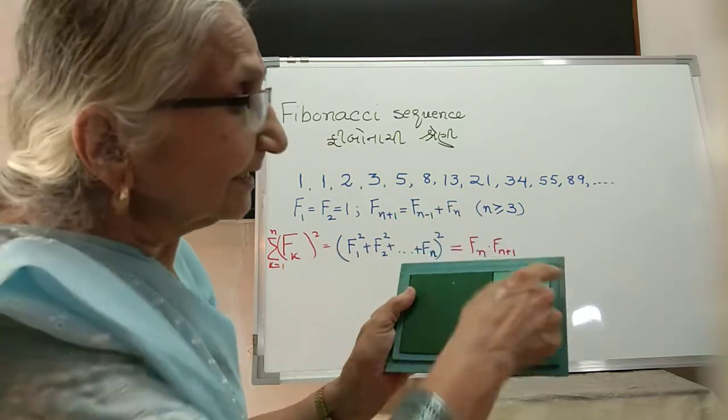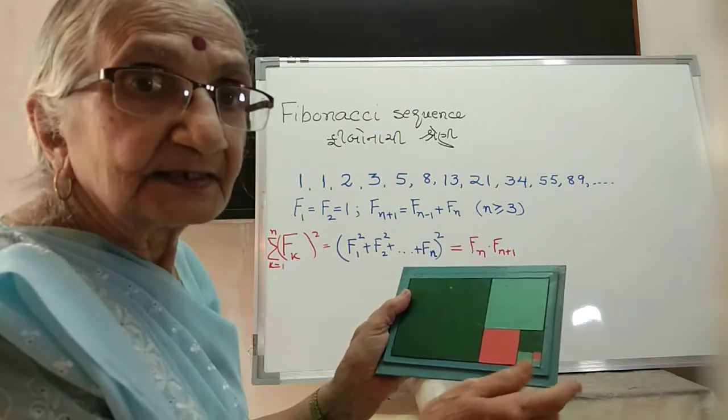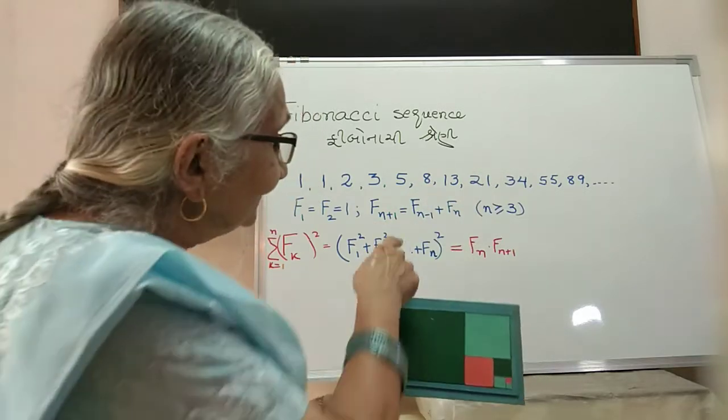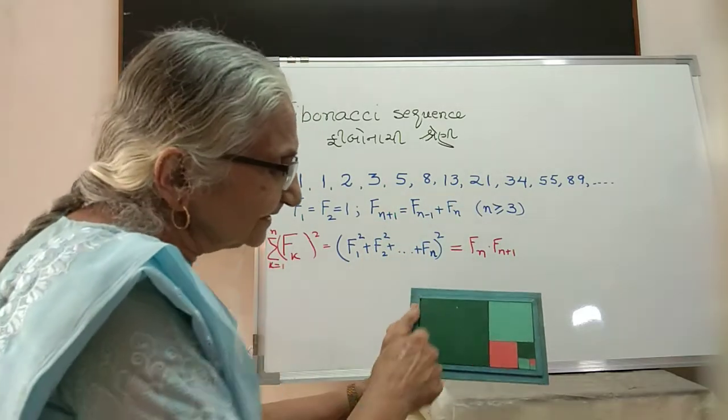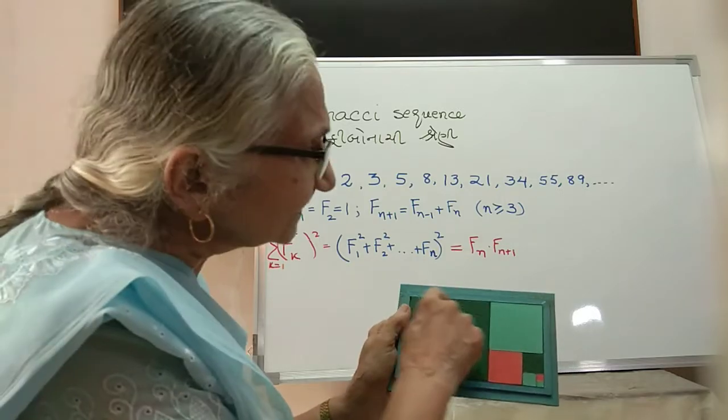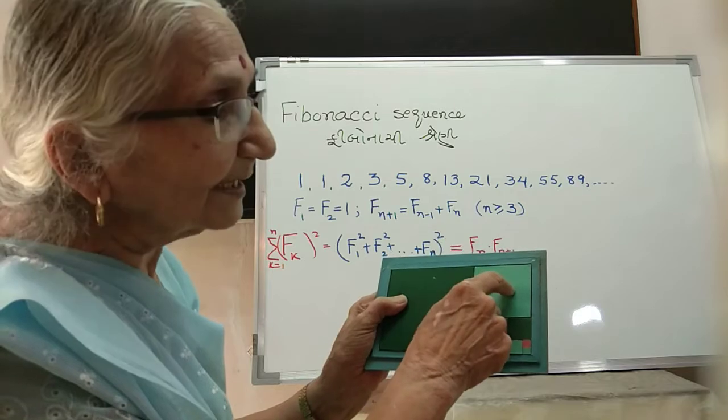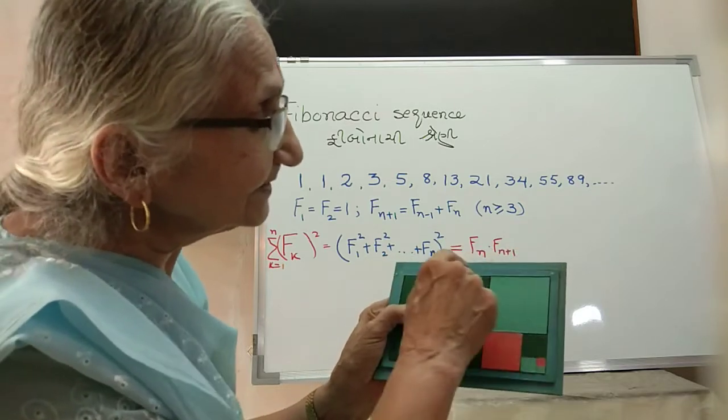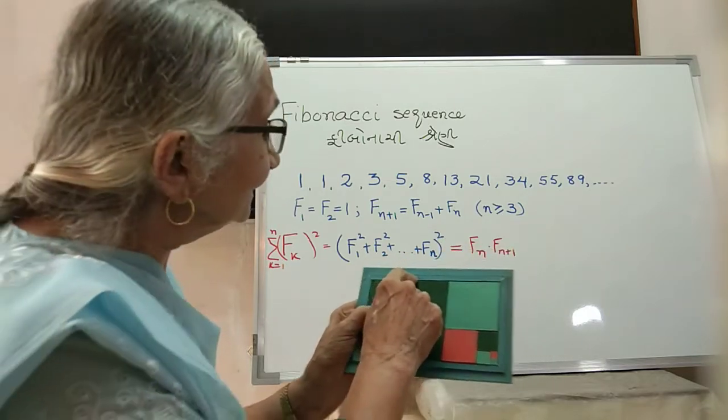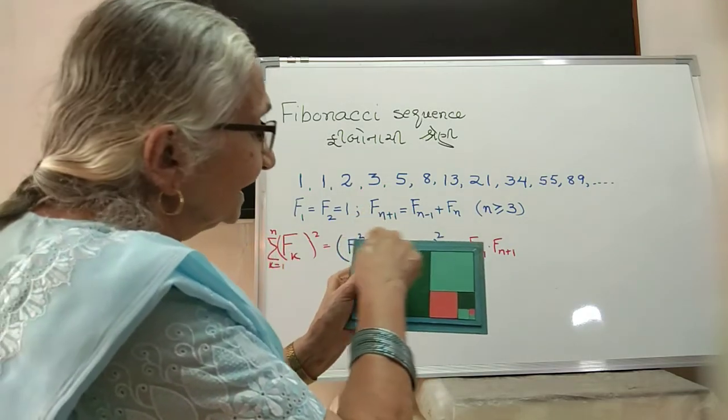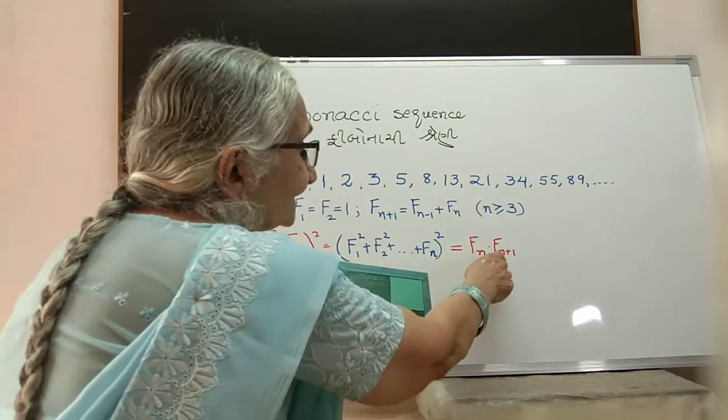Now one side of the rectangle we know—it is this, and this was our F_n, the last one. So this length is F_n. This was the previous one, so this is F_(n-1). So this length is F_(n-1) + F_n, but that is F_(n+1).